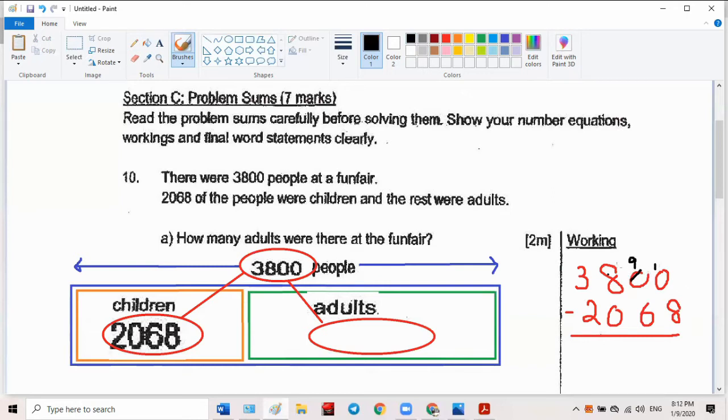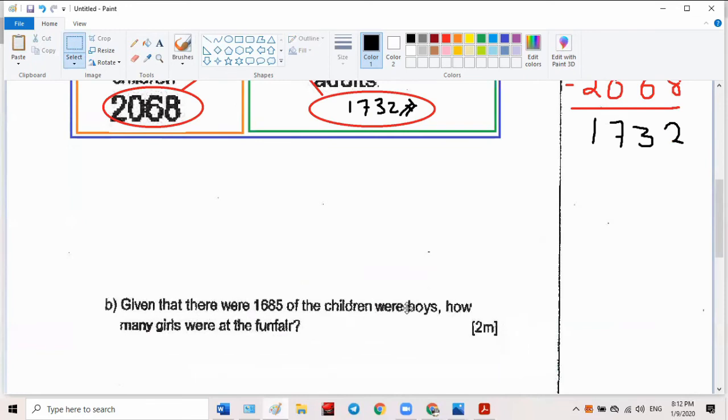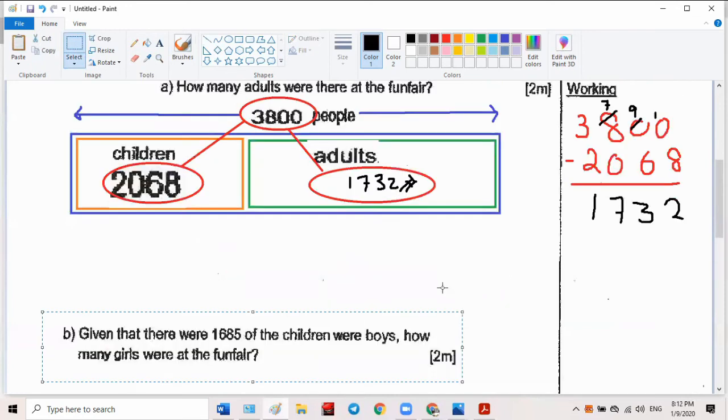Then borrow become 7, tell me what's the answer? 1732. Let me check that. So now the same question, but given that many children were boys, the children is made of girls and boys, isn't it?